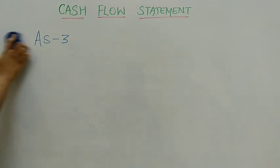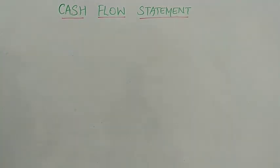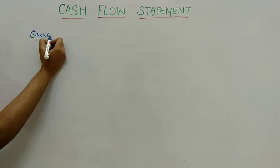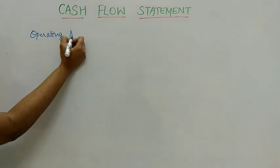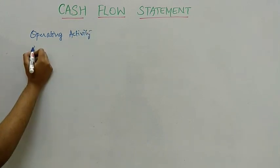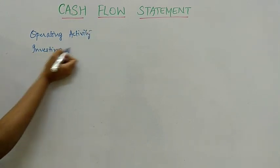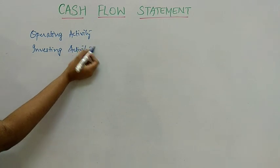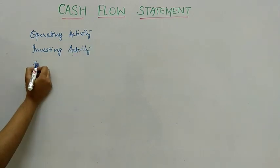The cash flow statement consists of three activities. First, operating activity. Second, investing activity. Third, financing activity.